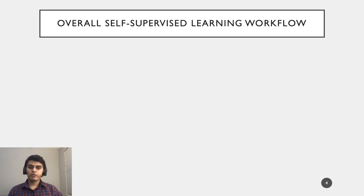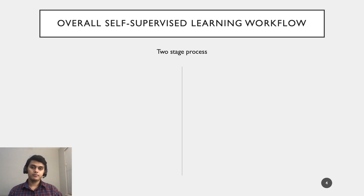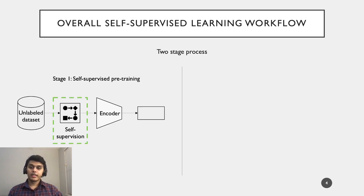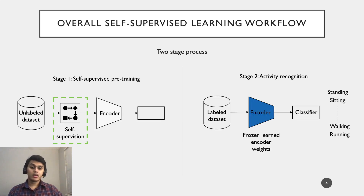We can begin with a brief overview of the self-supervised learning workflow. It is a two-stage process where the network is first pre-trained on unlabeled datasets and then fine-tuned to the specific activities of the labeled dataset. In the first stage, the encoder weights are pre-trained using self-supervision such that they are useful for the downstream activity recognition task. For the second stage, the learned encoder weights are frozen and only the classification layers are updated via backpropagation.